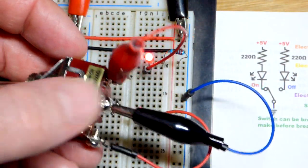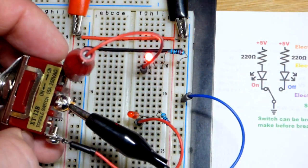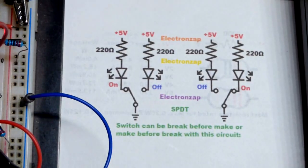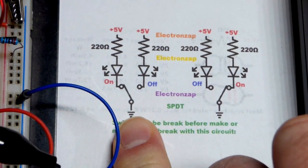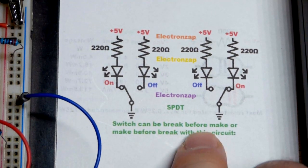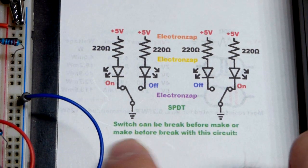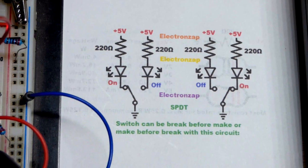We're just doing a demo of a low power circuit. So I wrote down here that these switches, they're either break before make or make before break, one of those two states.